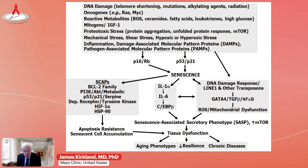Senescence is a necessary process for a lot of things to occur. For example, senescent cells form in the placenta of the mother and produce factors that drive the baby through the birth canal. Senescence is important in wound healing and in preventing cancer development. Conversely, if senescent cells persist and are not removed, they can cause dysfunction. They're normally only removed by the innate immune system, by natural killer cells.